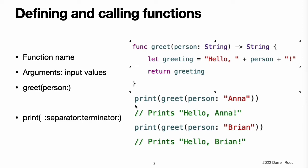You call the greetPerson function by passing it a string value after the person argument label, such as greetPerson("Anna"). Because the function returns a string value, greetPerson can be wrapped in a call to the print function to print that string and see its return value, as shown above. Note: the print function does not have a label for its first argument, and its other arguments are optional because they have a default value. The body of the greetPerson function starts by defining a new string constant called greeting and setting it to a simple greeting message. This greeting is then passed back out of the function using the return keyword. In the line that says return greeting, the function finishes its execution and returns the current value of greeting.